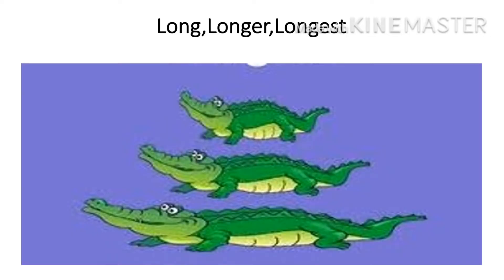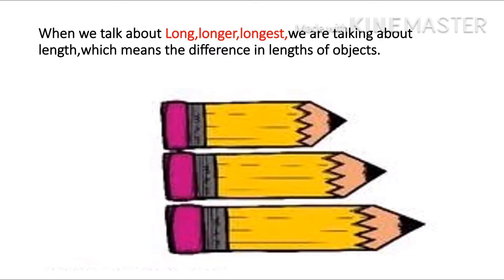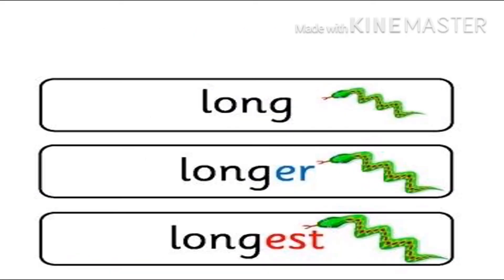Now we have reached the last topic of today, which is long, longer and longest. When we talk about long, longer and longest, we are talking about length, which means the difference in the length of objects. Can you see three pencils over here? They are all different in length, which shows us long, longer and longest. Now have a look at this image of three snakes and you can understand better long, longer and longest.